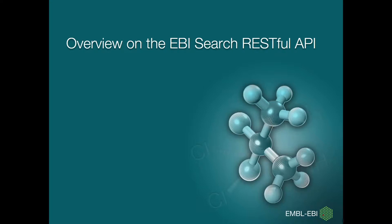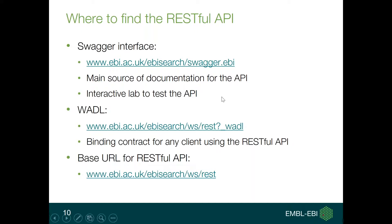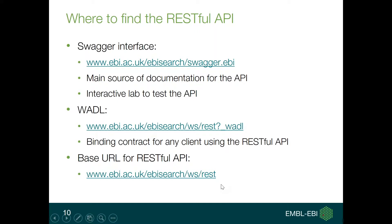I will now provide an overview of the EBI Search RESTful API. Where can we find it? There is a dedicated Swagger page. Swagger is a broadly used framework to document RESTful web services, and it is not only documentation but also an interactive interface to test API methods. The WADL associated with EBI Search is available at a specific URL, representing the binding contract for building web service clients. The base URL for all RESTful API methods is www.ebi.ac.uk/ebisearch/ws/rest.